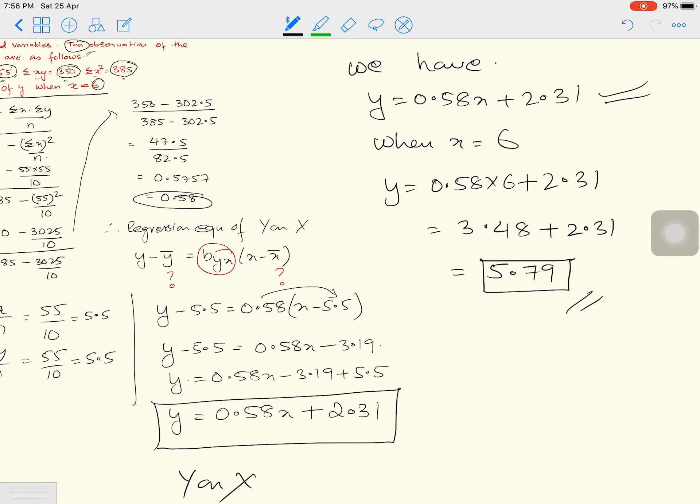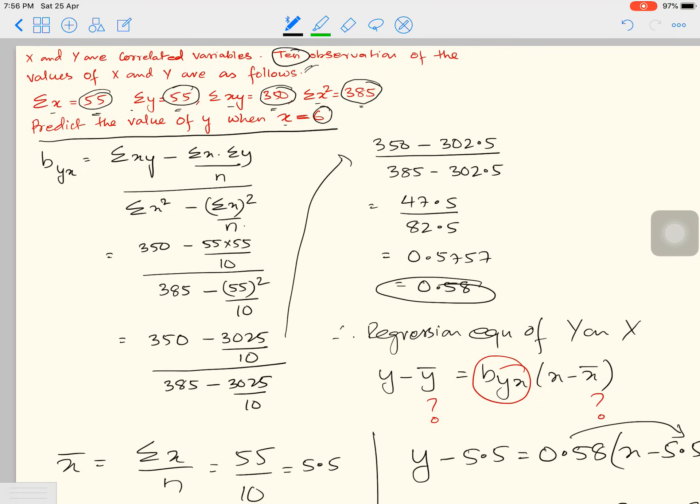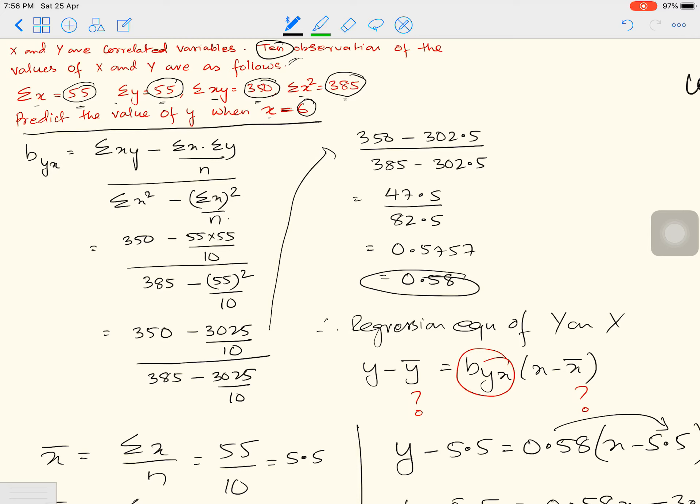So again, I'm repeating. You don't need to find both regression equations if it is not asked in the question. They have only said predict the value of Y when X equals 6. So whichever equation is necessary, just calculate that. If you have to find Y when X is given, you need Y on X. If Y was given and X was missing, then you would have to find X on Y.